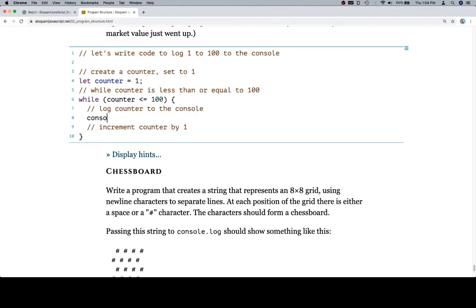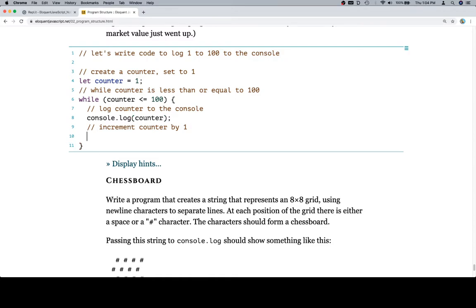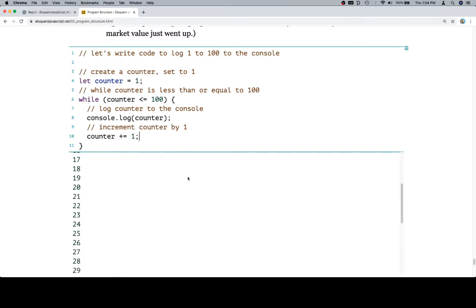Log counter to the console. It's simply simple. Console.log counter. Increment the counter by 1. So counter plus equals 1. Or counter plus plus. Both of those are going to work when we're incrementing by 1. And if we run this. Excellent work. 1 through 100. Log nicely to the console.